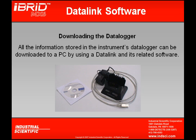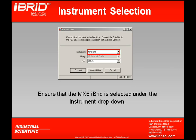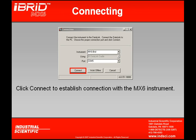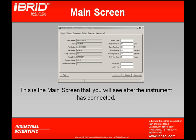Not only can I data log information and view it on the instrument's display, but I can also download that same information to a PC using something called a data link software kit. Once my software is installed, I'll see the following screens during my downloading procedure. Before you download, you need to ensure that MX-6 Hybrid is selected as your option under Instruments, and that you have the correct COM port selected. Once the MX-6 instrument is in its cradle, by clicking Connect, I'll be able to communicate with the instrument. Once communication is established, a screen will appear with six different tabs.